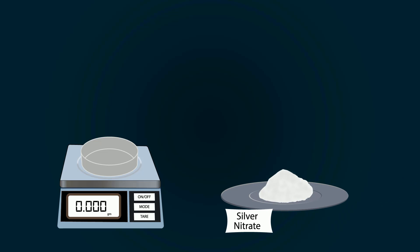Now add silver nitrate into the petri dish. We have to measure it up to 1.6987 grams.